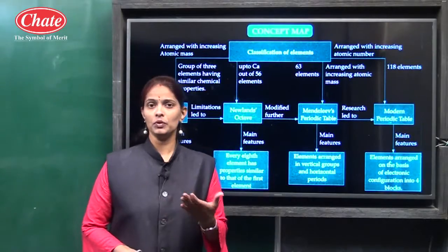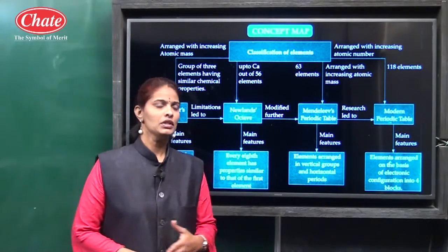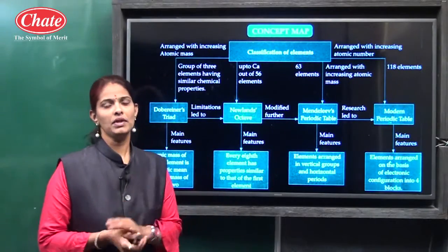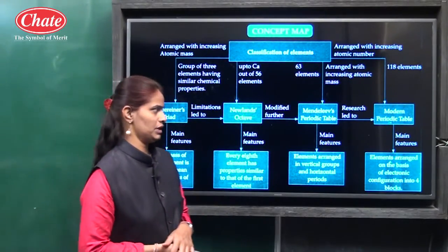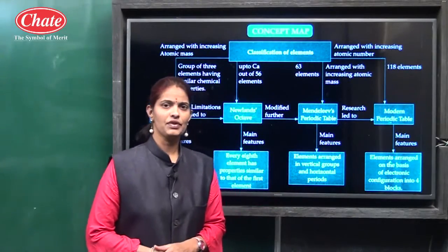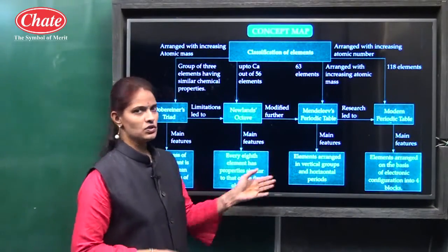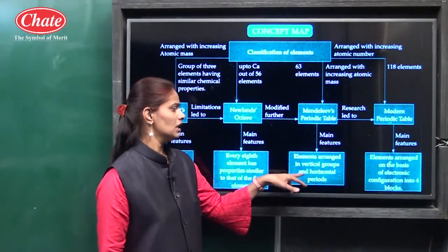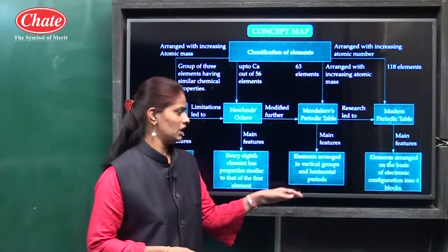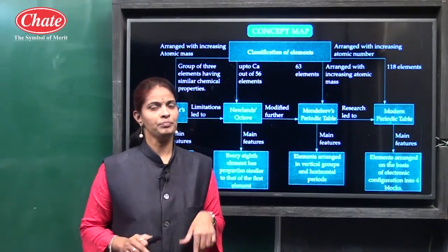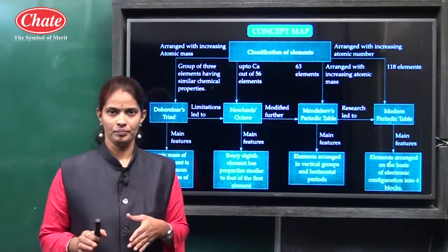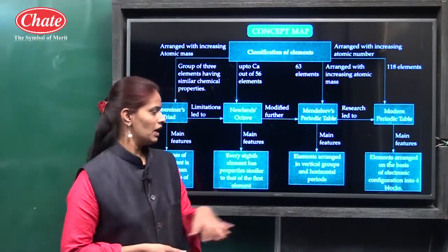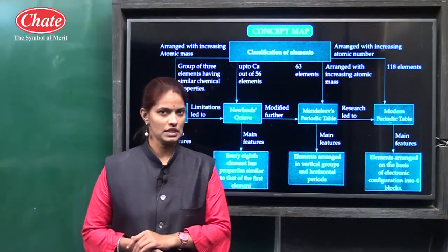There are some limitations in the study of Newlands — this law could be applicable only up to calcium. After calcium, this law could not be applicable for the next elements. So Mendeleev studied the classification of elements; he also arranged these elements in increasing order of their atomic mass. He arranged them in vertical groups and horizontal periods. This is based on Mendeleev's periodic law: properties of elements are the periodic function of their atomic mass. Here there are eight vertical columns and seven horizontal rows.